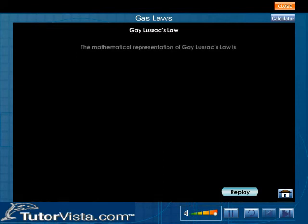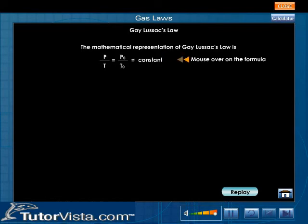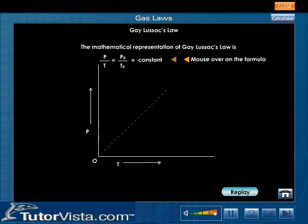If P0 and P denote pressure of a given mass of a gas at 0 degree Celsius and theta degree Celsius respectively, then the mathematical representation of Gay-Lussac's law is P by T is equal to P0 by T0 is equal to a constant. Thus, the pressure of a given mass of a gas is directly proportional to its absolute temperature, provided its volume remains constant. The graph between P and T is a straight line theoretically.